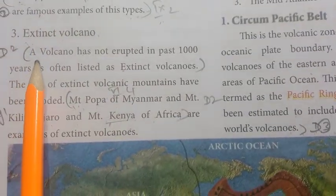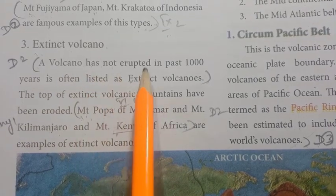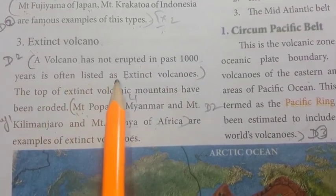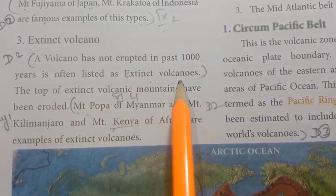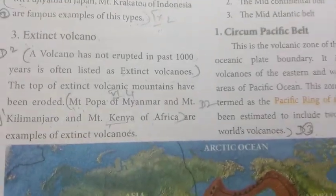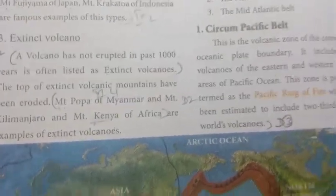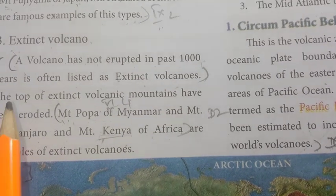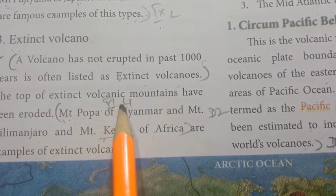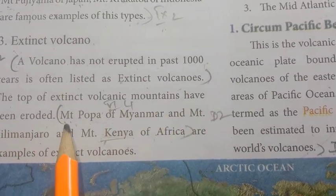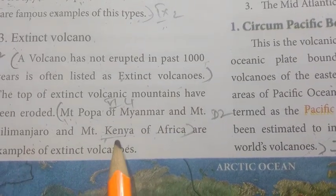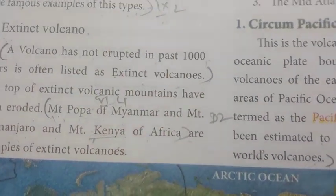Extinct volcano: a volcano that has not erupted in the past thousand years is often listed as extinct. The tops of extinct volcano mountains have been eroded. Examples: Mount Popa of Myanmar, Mount Kilimanjaro and Mount Kenya of Africa.